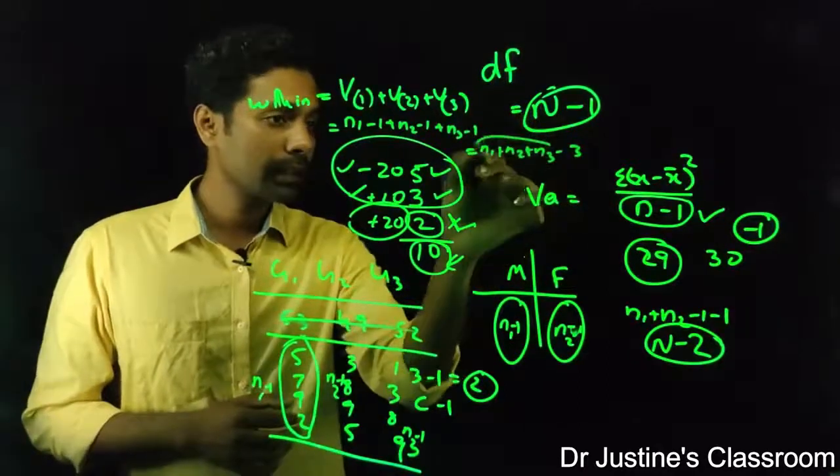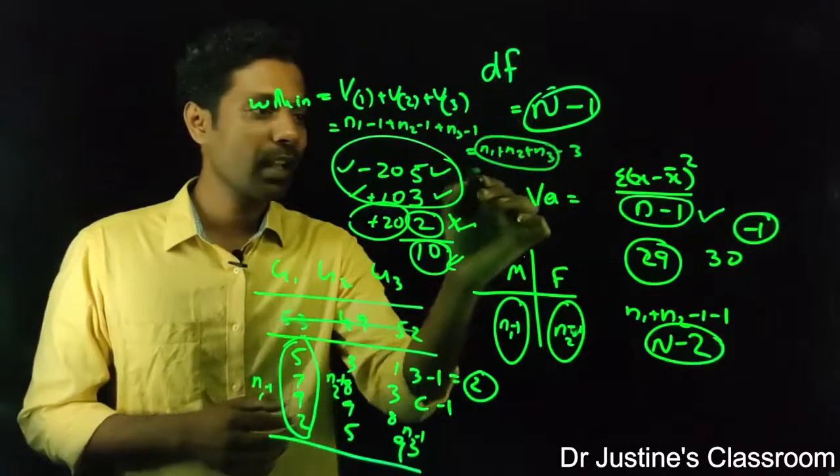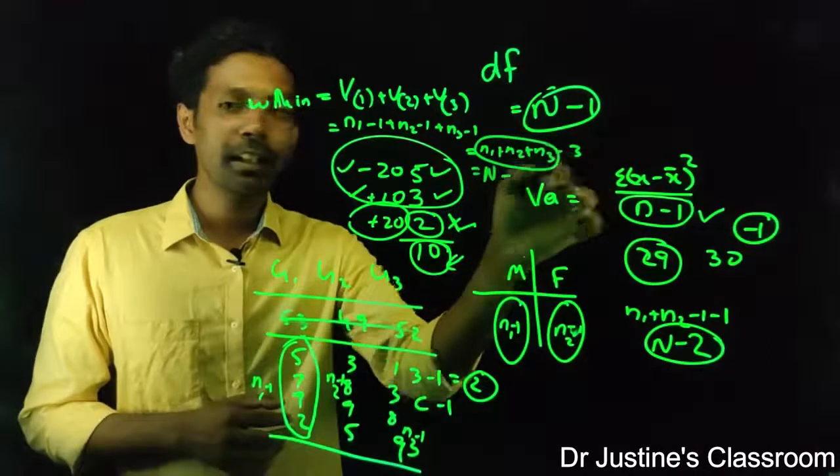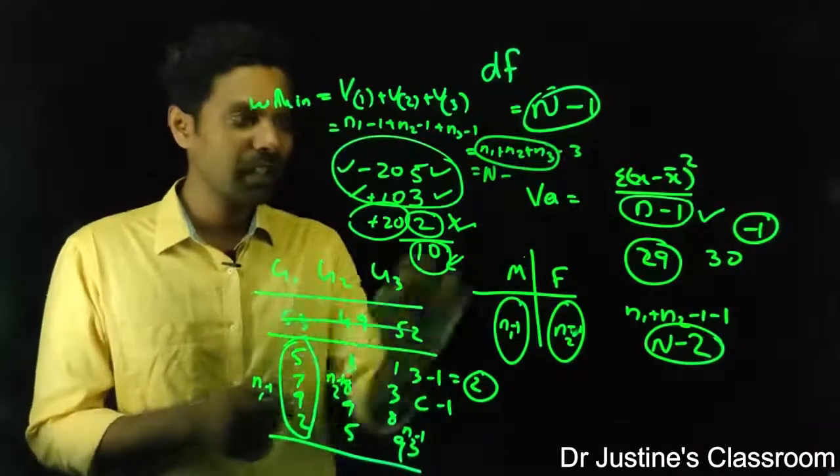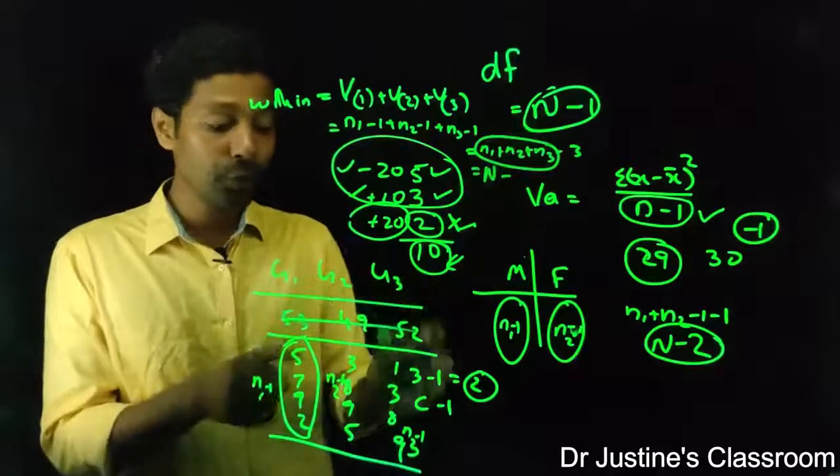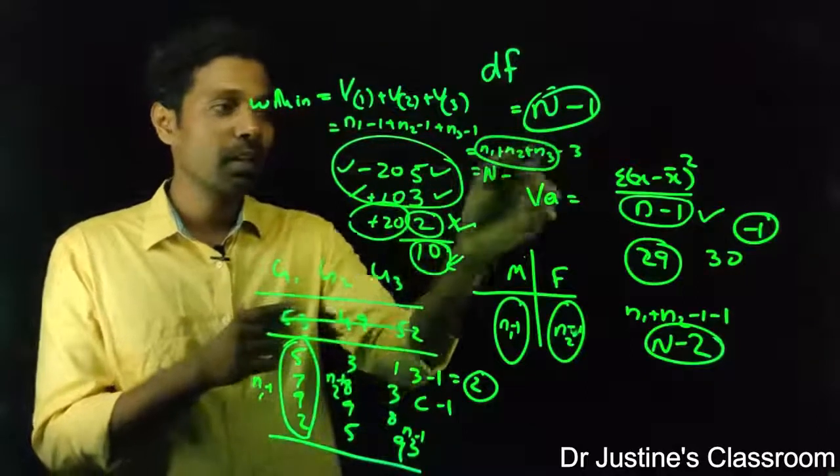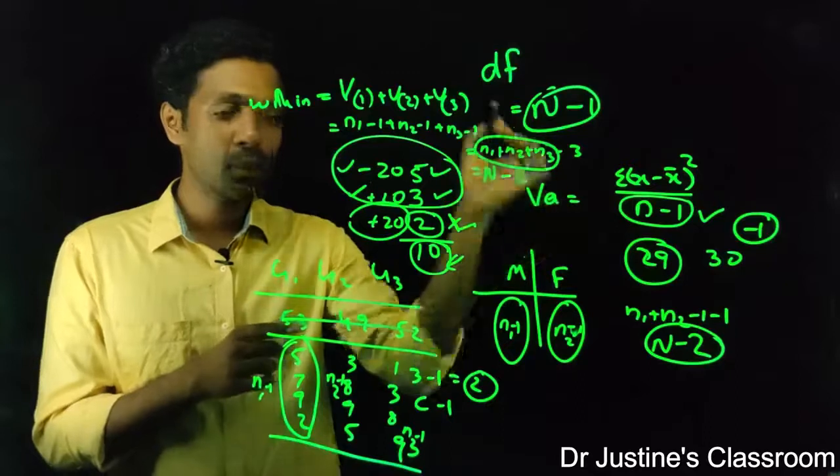So what is this? The total sample size, n, minus what is 3 here? Number of groups. I have three groups here, I get 3. What if I have four groups? I will get four ones, so it will be 4. So it is basically number of groups.